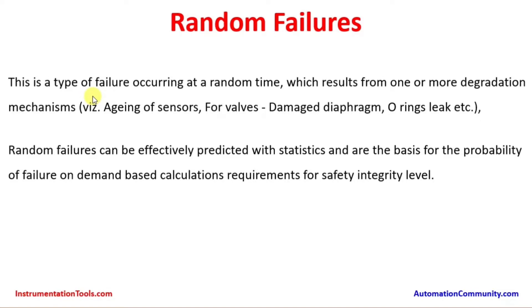Random failure is a type of failure occurring at a random time which results from one or more degradation mechanisms. For example, aging of sensors — this is applicable for SIS sensors. For valves, examples include damaged diaphragm, o-rings, leaks, etc. Valves have many mechanical components like seals, o-rings, and pneumatic devices, and any damage in those diaphragms can result in a random failure.